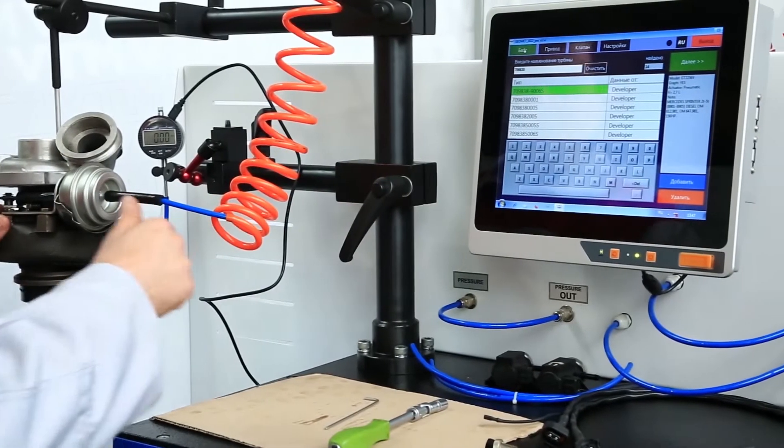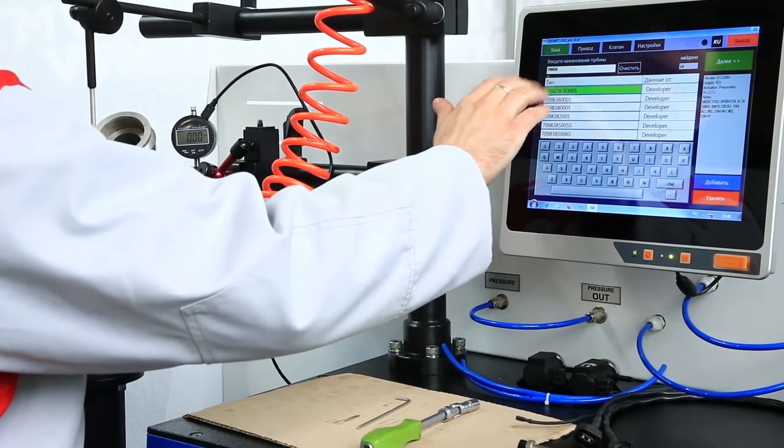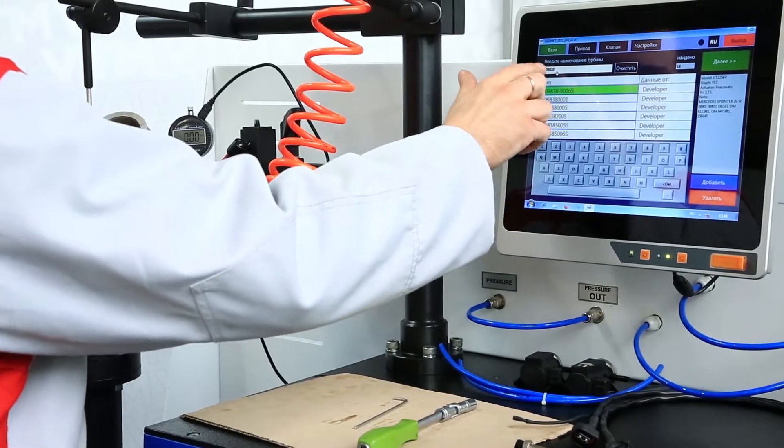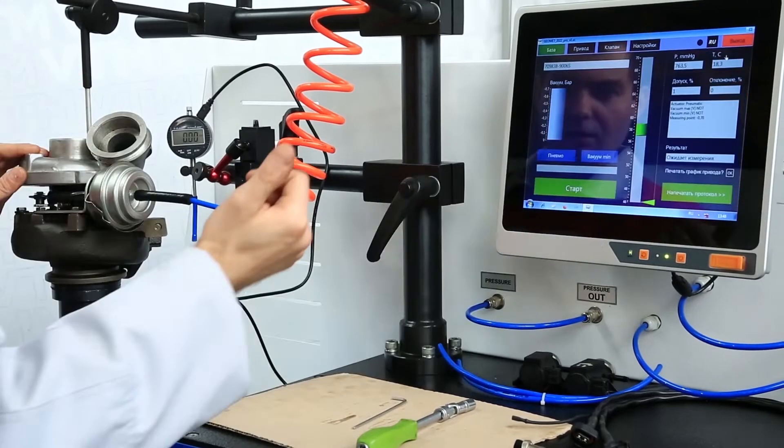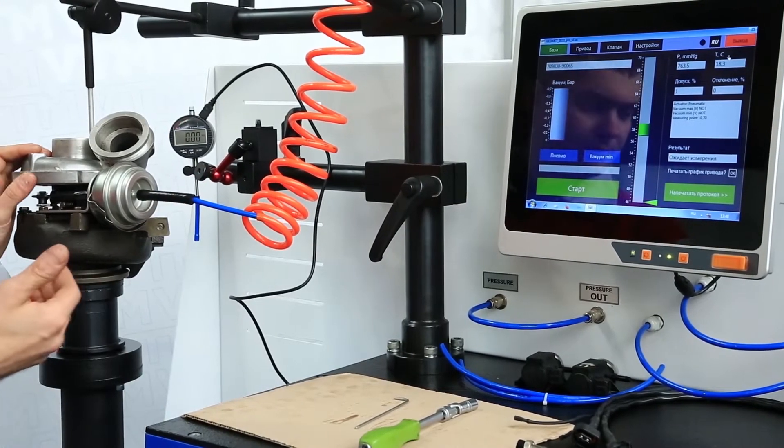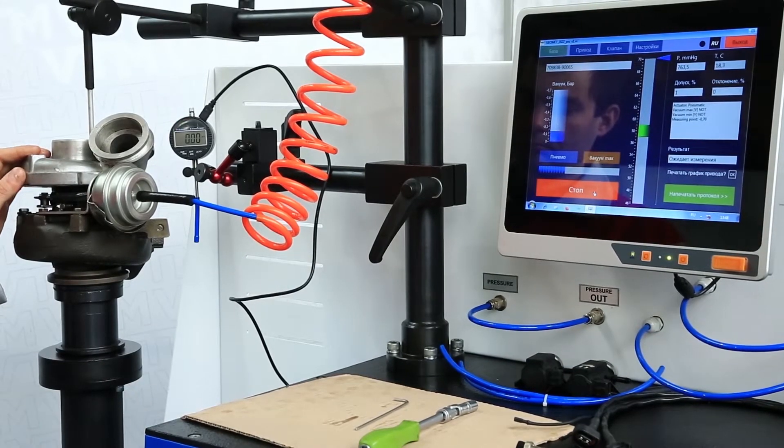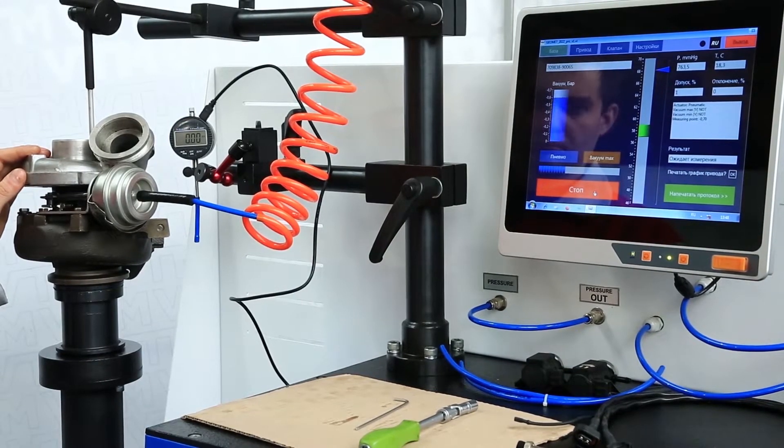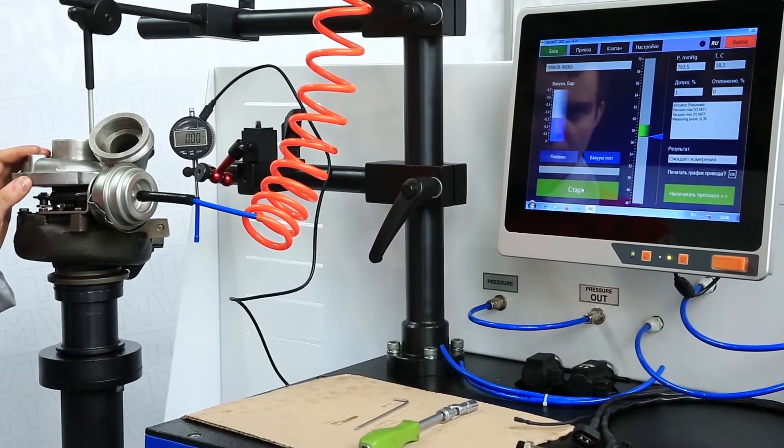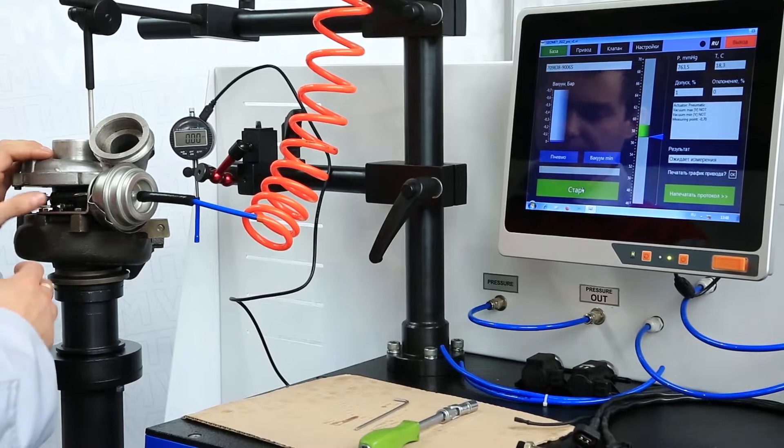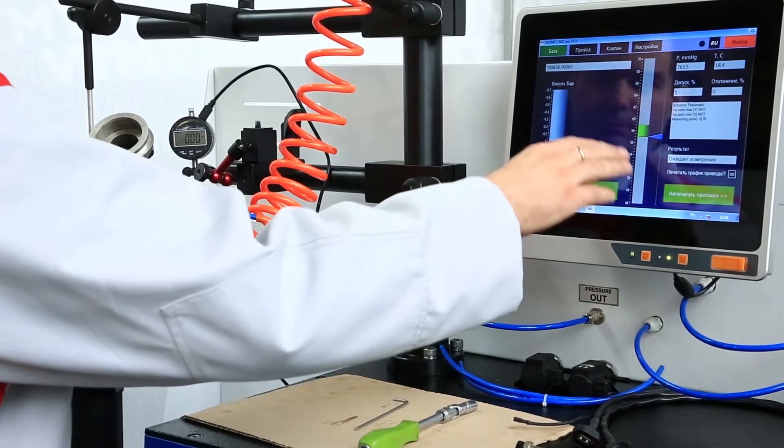In order to calibrate the turbocharger, you need to enter the turbocharger number into the database. Here we have already introduced it. Here's our turbocharger. Now we will look at the stop setting. In this case, the turbocharger is configured. We can see it by the tolerance field. The setting is within the tolerance field.